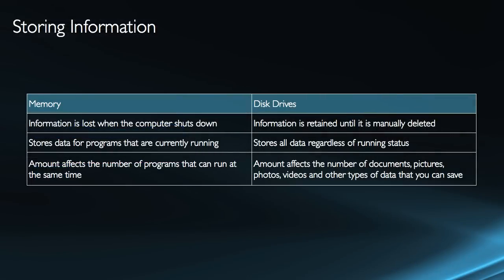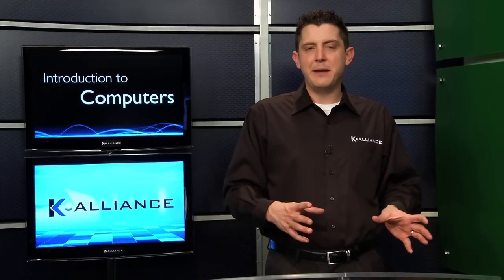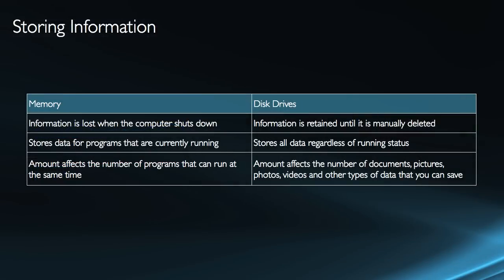If you save the document to the disk drive, it's retained until you manually delete it. Memory's purpose is to store data for programs that are running. The drive's purpose is to store all data regardless of whether a program is running — it's permanent storage. The more memory you have, the more programs you can run at one time. The accurate statement is: if your computer is running slowly, you need more memory. If you're having trouble downloading or saving something, you need more hard drive space. Disk drive space affects the number of documents, pictures, and videos you can save.